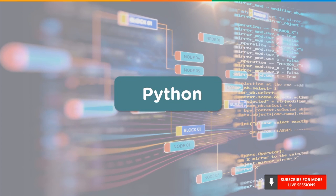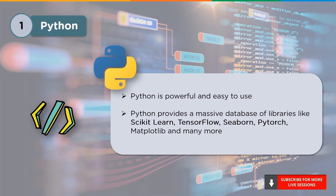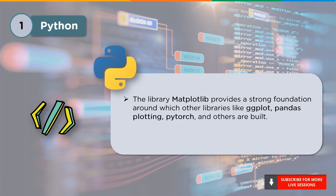And topping the list as always, we have Python. Developed by Guido Van Rossum, Python is an open-source general-purpose programming language with simple syntax and English-like commands, used for web frameworks and web applications. Python provides a massive database of libraries like scikit-learn, tensorflow, seaborn, pytorch, matplotlib, and many more. There are now over 70,000 libraries in the Python package index and the number continues to grow. The library matplotlib provides a strong foundation around which other libraries like ggplot, pandas plotting, and pytorch are built. Arguably the most popular data analysis library is pandas. Python has the toolset to perform a variety of powerful functions — it's no wonder why data scientists embrace Python.